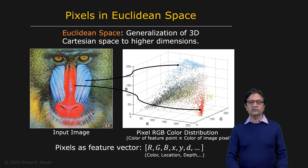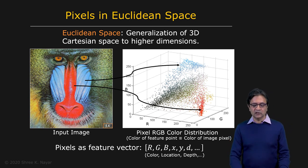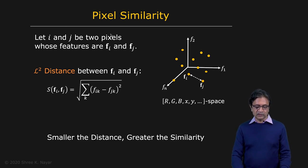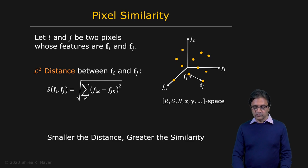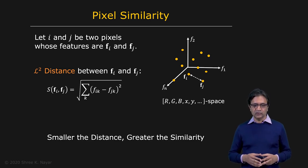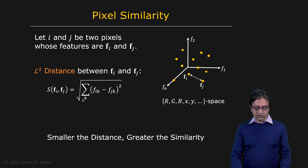So now, in order to perform segmentation or clustering, what we need to do is have some definition for the similarity between pixels. Let i and j be two pixels, and let fi and fj be the features — the visual attributes — at those two pixels. These are two points in feature space, and one way we can measure the similarity between them is by using the L2 distance between fi and fj, as shown right here. The smaller the value of s, the greater the similarity.